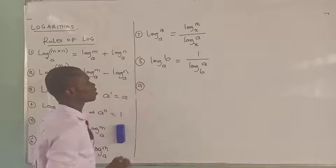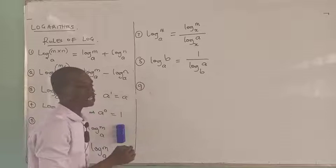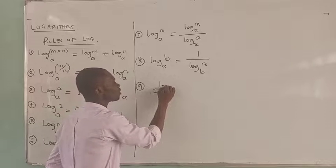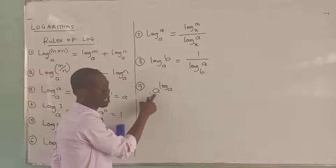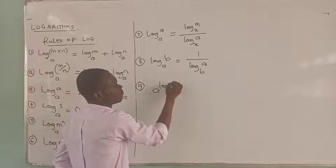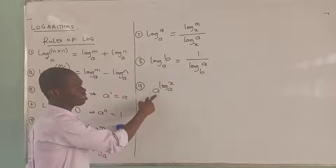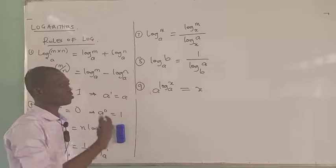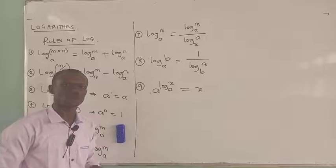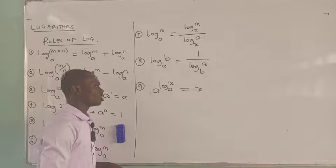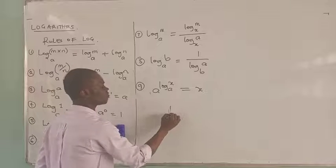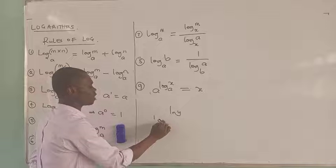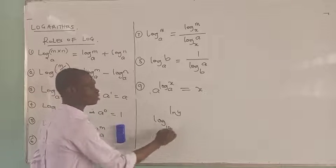Finally, a very vital rule: if you have any number raised to the power of a log, where the log has the same base as the number you raised to that power, and the number of the log is any value X, this gives you just X. We make use of this rule a great deal when dealing with topics in differential equations and in functions. For instance, if I have the ln of Y — that reminds me: the logarithm of a number to base 10 is called the common logarithm.